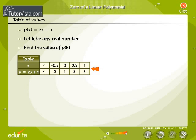We form a table with the different values of x and the corresponding values of y. From the table, find the zero of 2x + 1. Key in the answer.